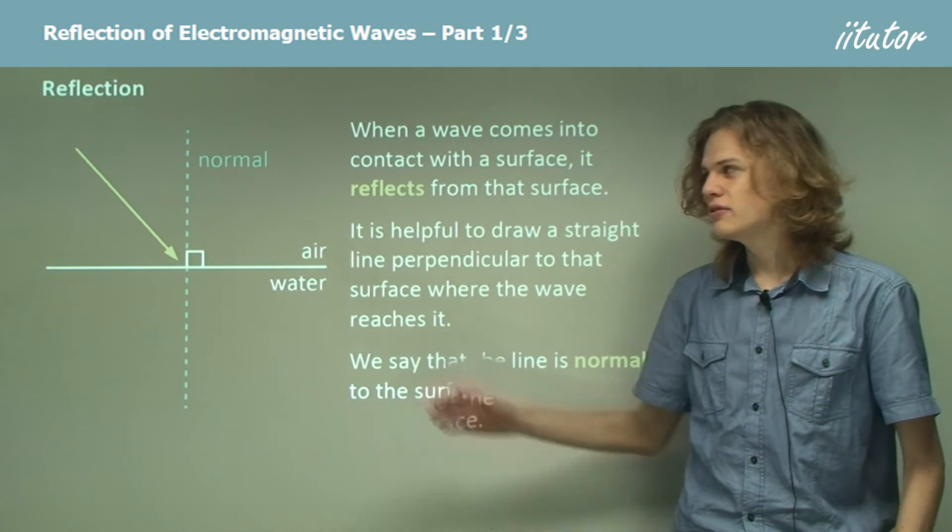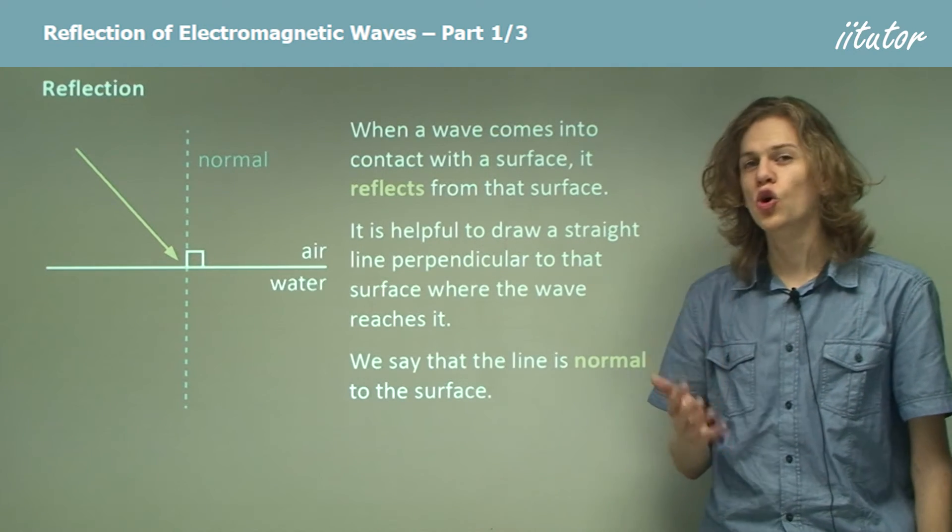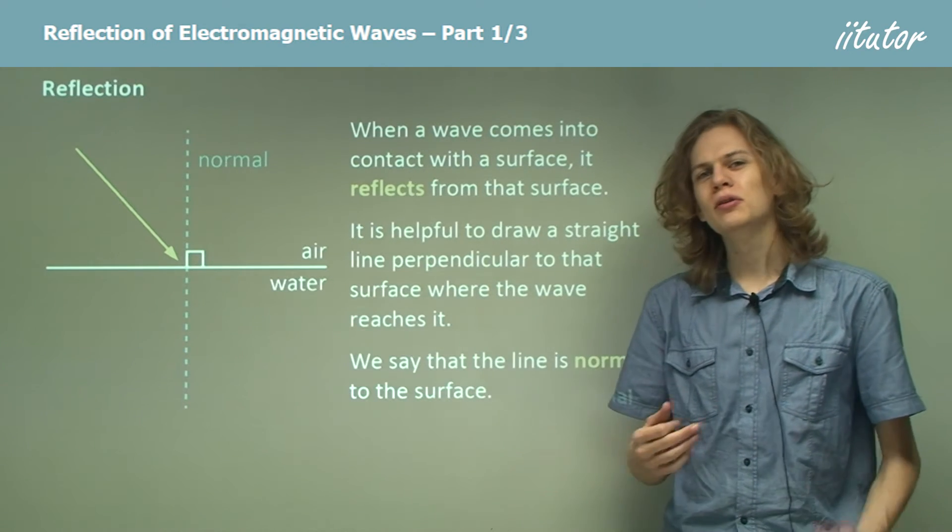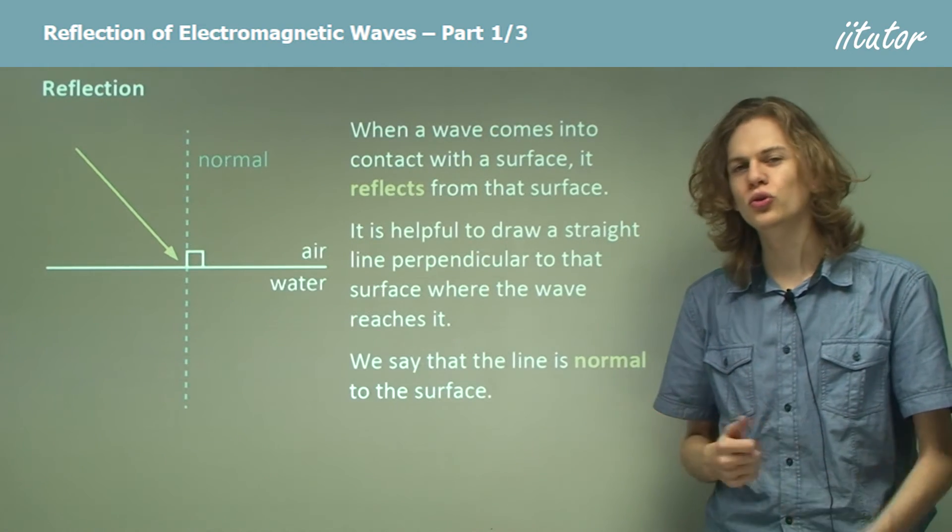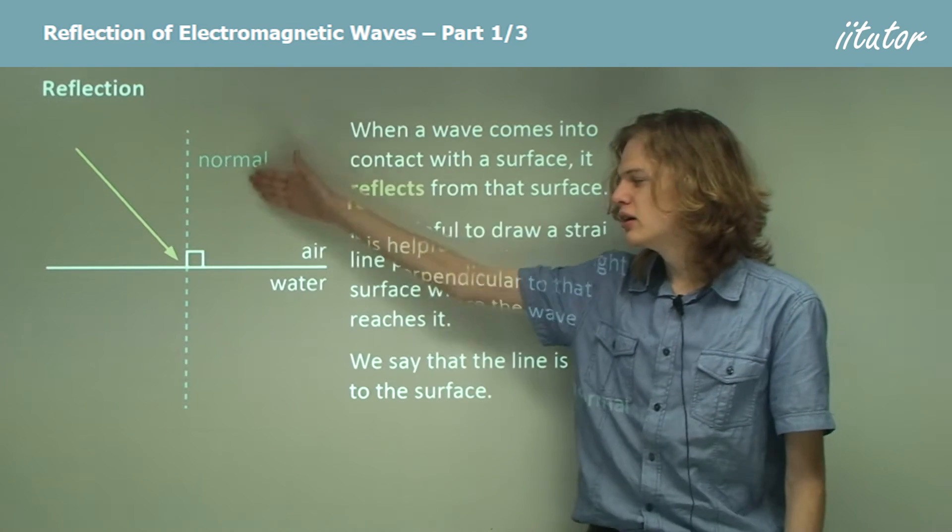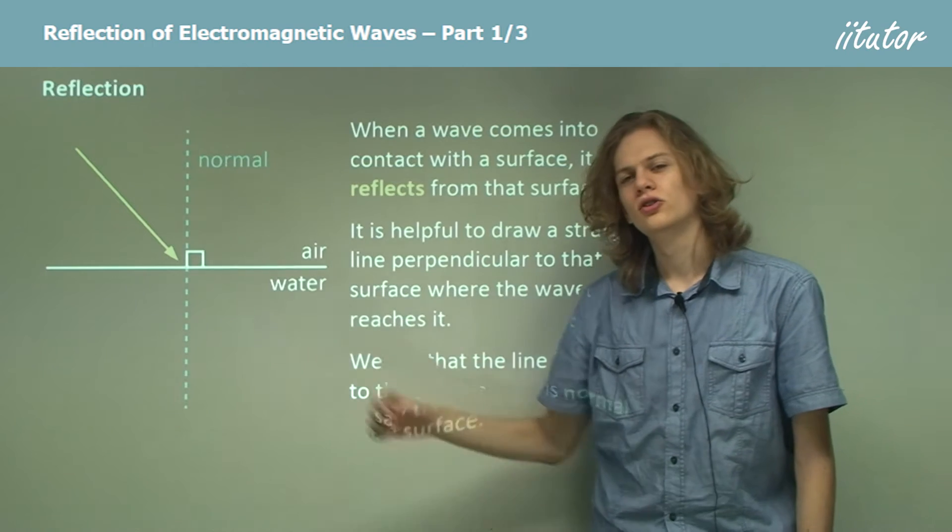And of course, as we can see from the diagram, we call this the normal. We can say that this line is normal to the surface, or we can simply say that it is a normal to the surface. In either case, it means that we have a straight line perpendicular to the boundary.